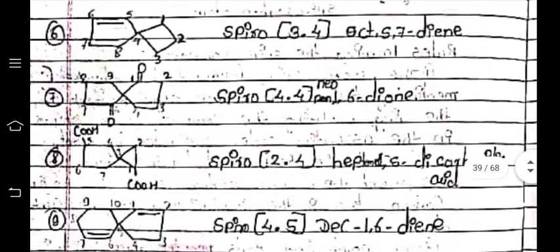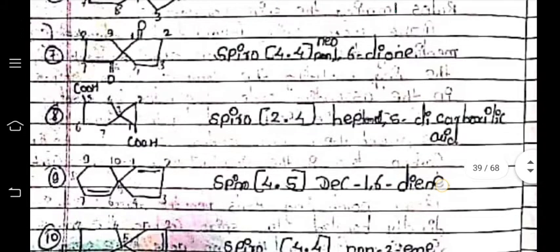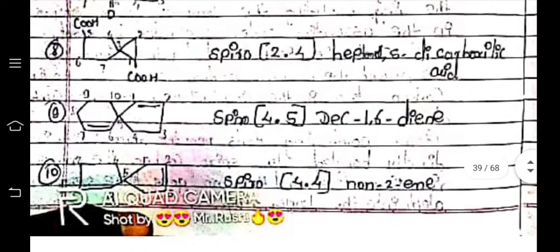Next is spiro[4.4]nona-1,6-dione — because functional groups (ketones) are written at the end of the name. Next is a structure with two carboxylic acid groups: spiro hept-1,5-dicarboxylic acid. The next structure has an alkene system at positions 1 and 6, giving spiro deca-1,6-diene.